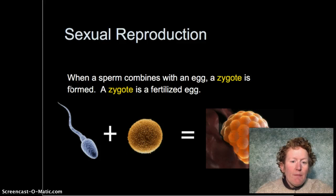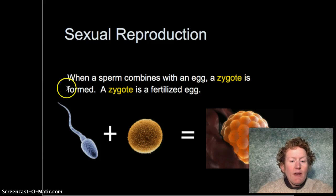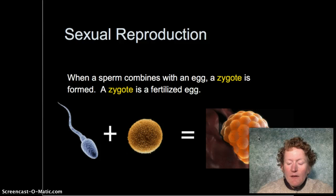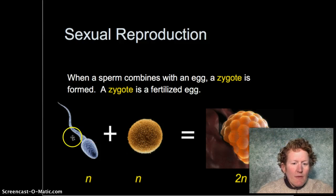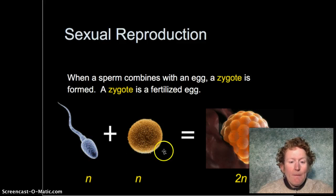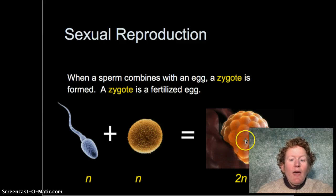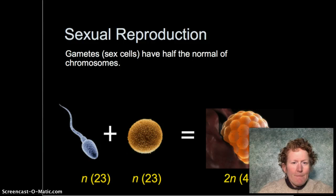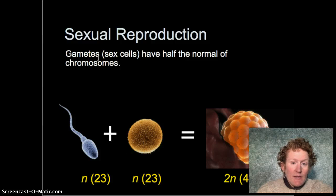The reason we need meiosis is to reduce the number of chromosomes by half to get eggs and sperm. When eggs and sperm combine, they make a fertilized egg called a zygote. The sperm has 23 chromosomes — one of every type — and the egg also has one copy of every 23 chromosomes. Together they make two copies when they form a zygote. Meiosis produces these sex cells — gametes, eggs and sperm — that have half the normal chromosomes.